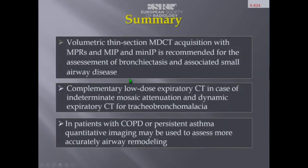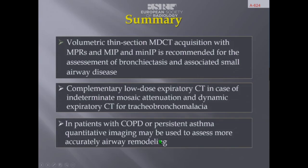In summary, volumetric thin-section MDCT acquisition with multi-planar reformations, MIP, and MinIP is recommended for the assessment of bronchiectasis and associated small airway disease. Complementary low-dose expiratory CT is recommended in cases of doubt about the presence of mosaic attenuation, and dynamic expiratory CT for tracheomalacia. In patients with persistent asthma, quantitative imaging may be used to more accurately assess airway remodeling, obtain a better phenotype of these patients, and achieve better targeted treatment.